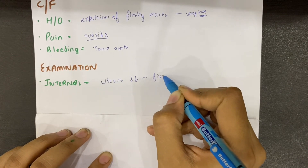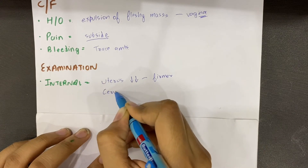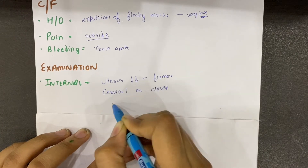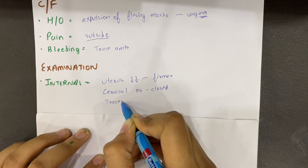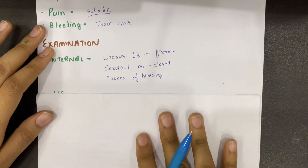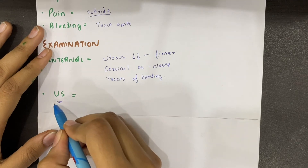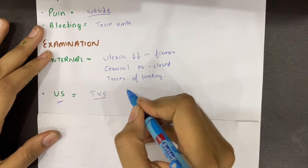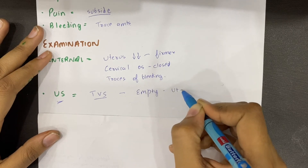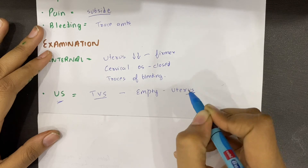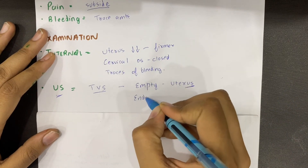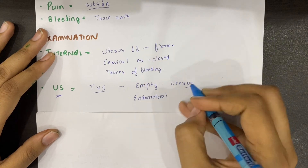On examination, the uterus is firm and markedly reduced in size because the entire products of conception have been expelled — the uterine cavity is now empty. The endometrial lining is also relevant to assess.